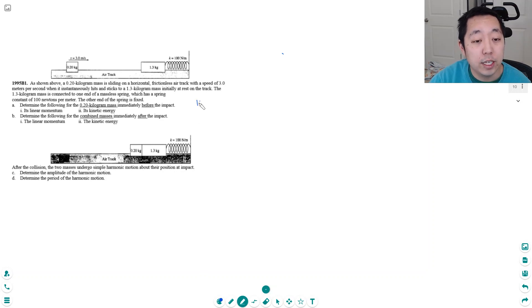So the kinetic energy is given by one half mv squared. This thing has a mass of 0.2 kilograms and its velocity is 3 meters per second, and I square it. So 9 times 0.2 times 0.5, that's 0.9 joules. That's its kinetic energy.